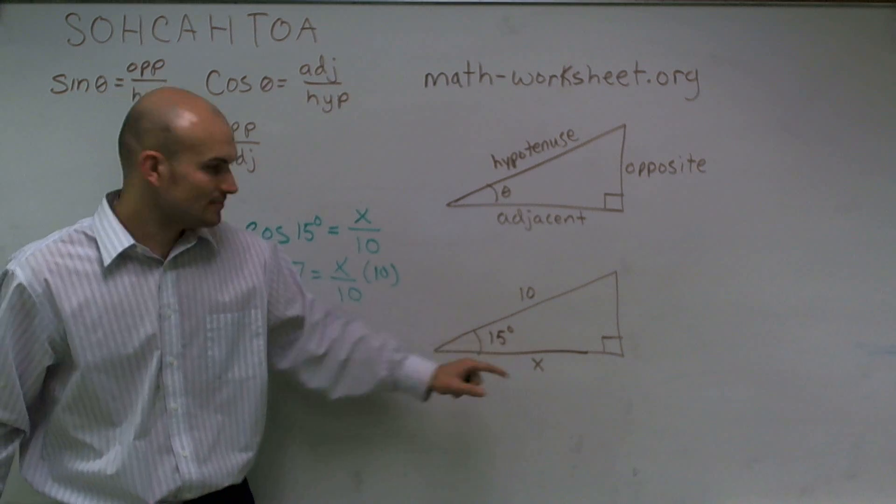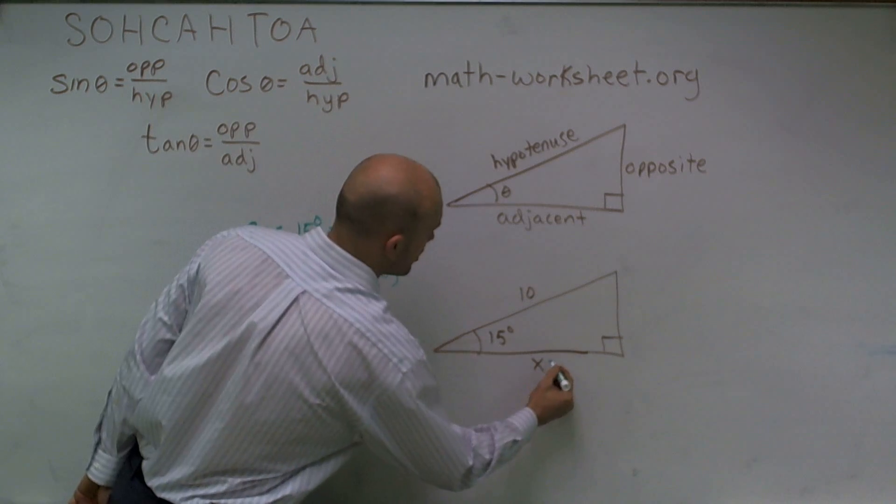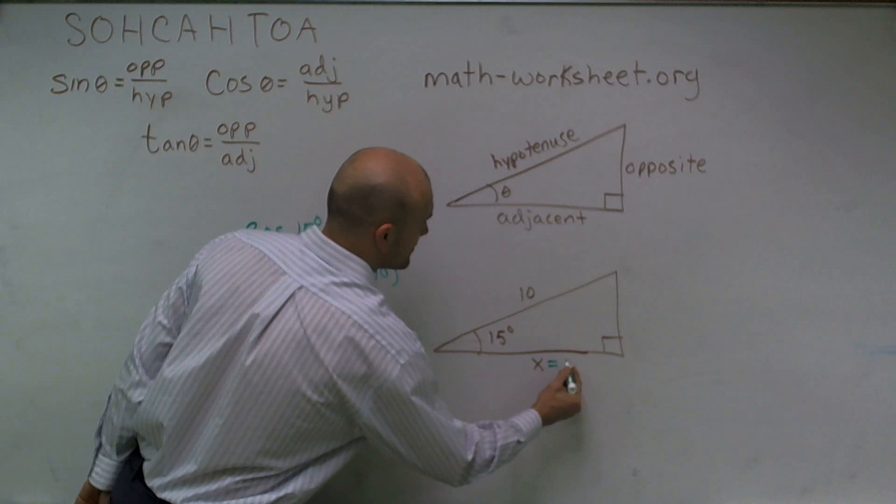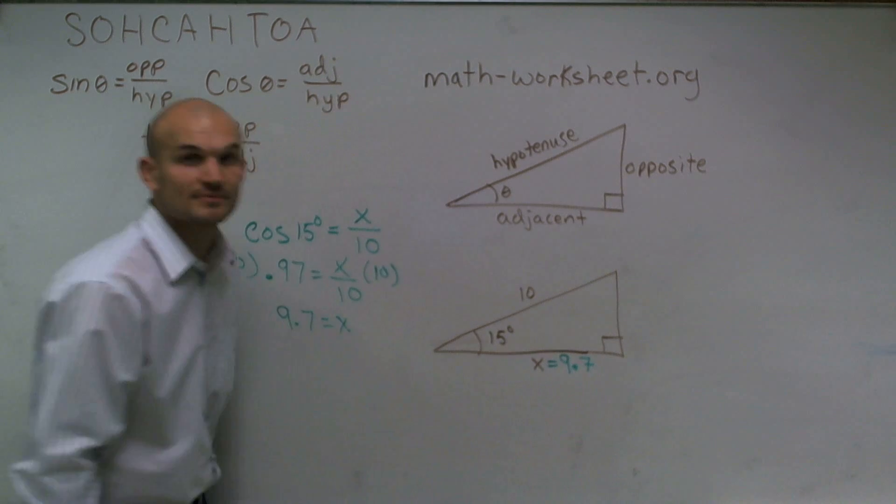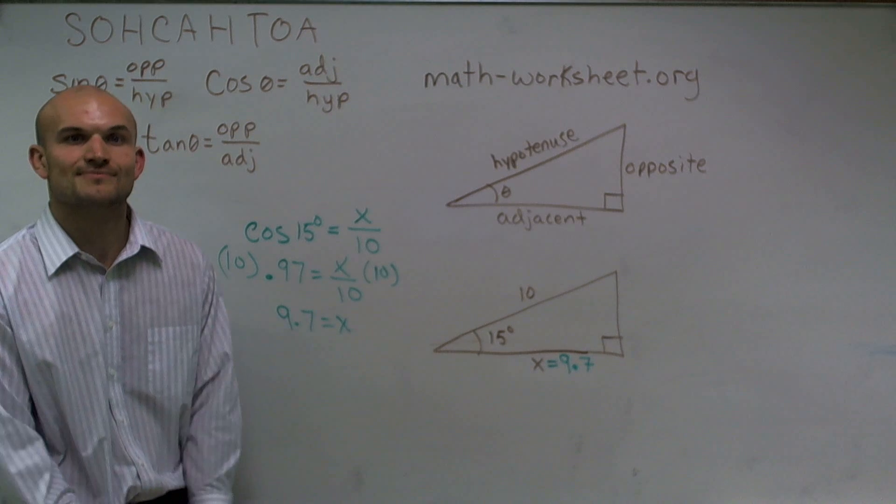So looking at my triangle, I have now just determined what the adjacent side of my angle is. I'm sorry, adjacent side of my triangle, which is 9.7. So that's how you solve this missing triangle. Thank you.